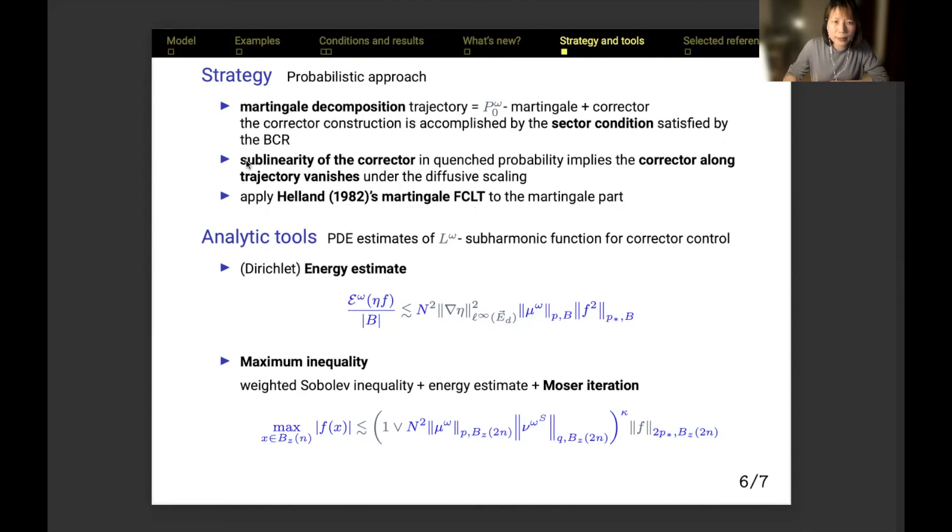In particular, in the second sublinearity step, we use PDE estimates for subharmonic function to control the corrector. For instance, we derive energy estimates to control the energy of the cutoff subharmonic function F by the volume, cycle length upper bound N, supremum norm gradient of cutoff function eta, space average p-norm of the jump rate at the site, space average p-star norm of F squared, with p-star being the Hölder conjugate of p. Together with weighted Sobolev inequality and Moser iteration, we get upper bound of the maximum of F inside the box. In the upper bound, the q-th moment condition on the symmetric rate appears in the form of space average q-norm of the sum of inverse symmetric rates.